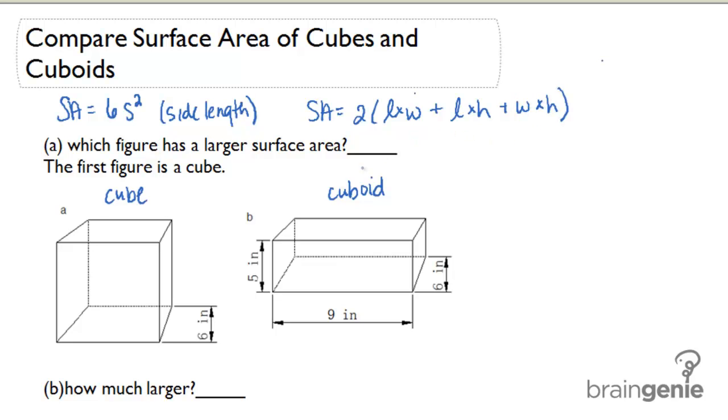So let's figure out the surface area for each one of these solids. For the cube, my surface area is going to be 6 times 6 squared which is just simply 216 square inches.